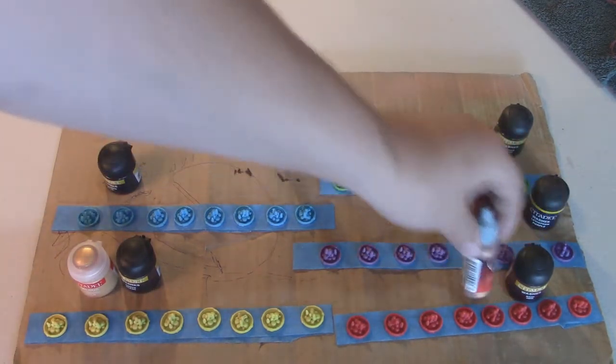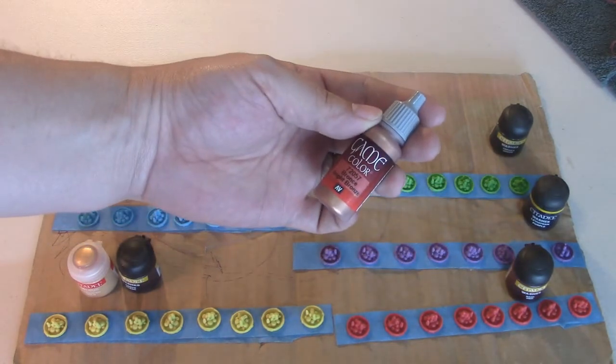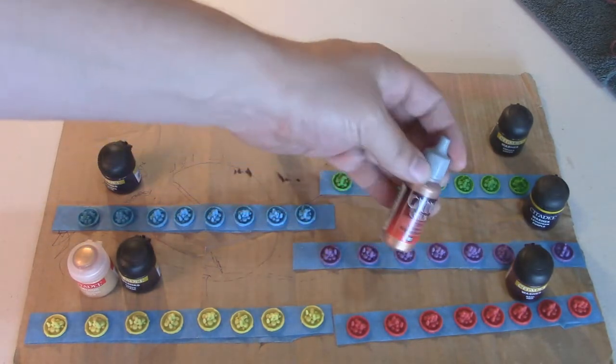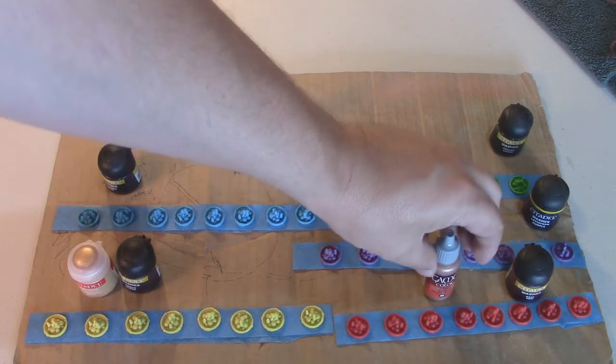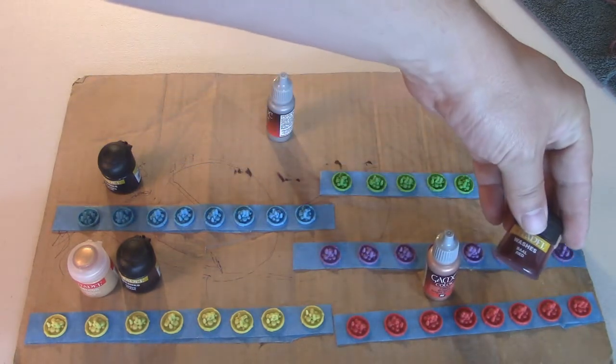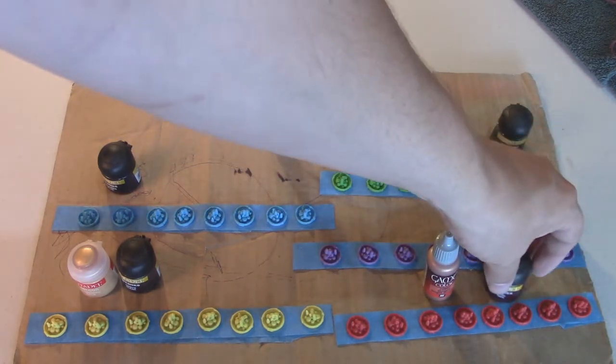And for the red, I have this bright bronze, this is a Vallejo game color, and that's going to get hit with just a Baal Red, so a red, a very red wash.